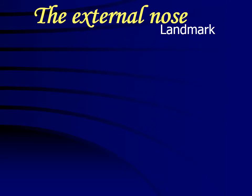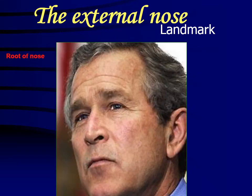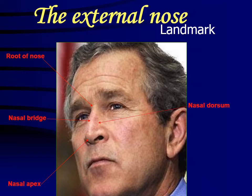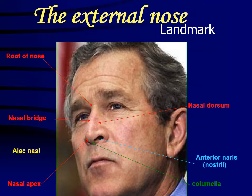Now we will look at the parts of the external nose in a complete diagram where each part will be mentioned. First is the root of the nose, which is mentioned here. Next is the nasal apex, also mentioned here. Then we have the nasal bridge, which connects the root of the nose to the nasal apex. Then we have the nasal dorsum, which is the side part, also mentioned here.